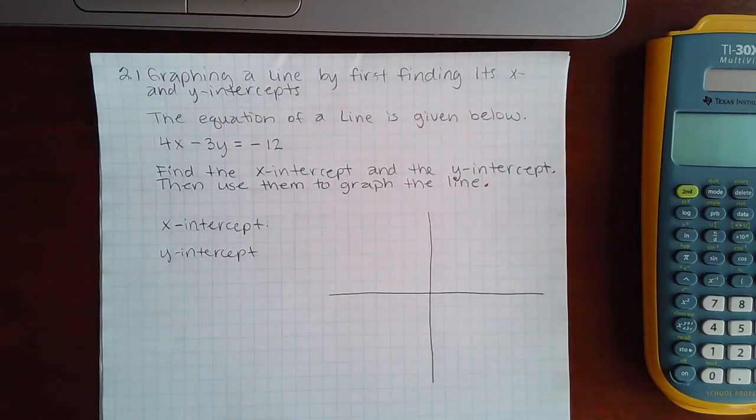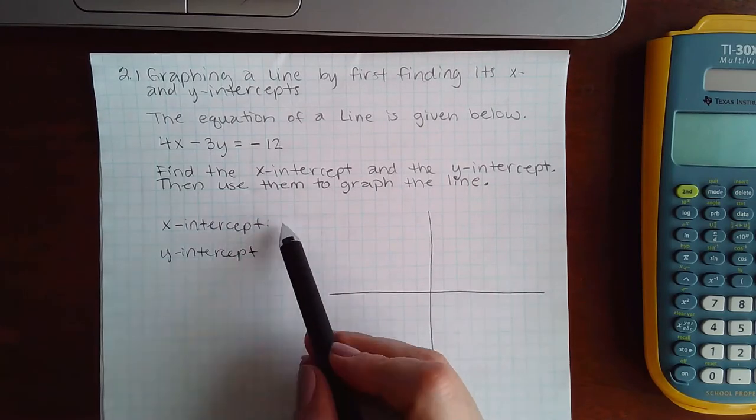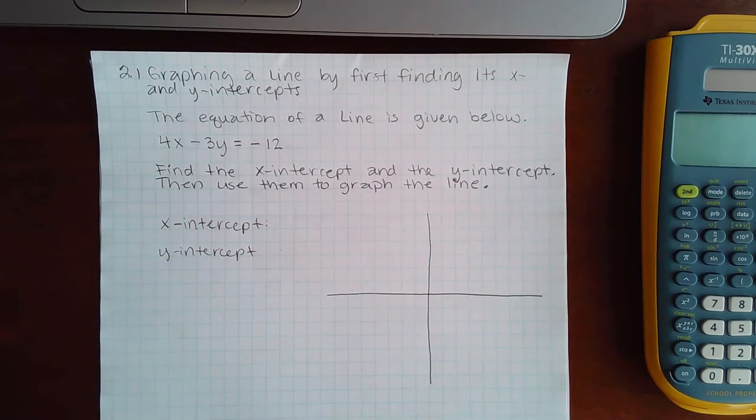Here we have graphing a line by first finding its x and y intercepts. They want me to tell them what the x and y intercept are, and then they want me to graph it. So they're basically putting two topics that we did before this topic together.